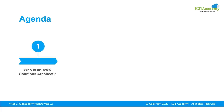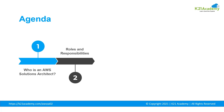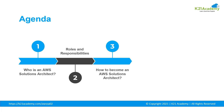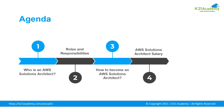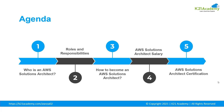Let us take a quick glance at the agenda. Firstly, we will be seeing who is a solution architect and then who is an AWS solutions architect. Then we will see the roles and responsibilities of an AWS solutions architect. Post that, we will understand how to become an AWS solutions architect, the job trends and salary trends, and finally the certification details.